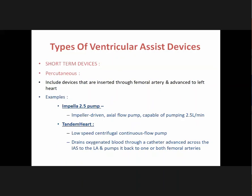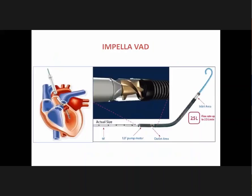Types of VADs: short-term devices are inserted percutaneously via an extracorporeal system. The two commonest percutaneous short-term devices are the Impella and the Tandem Heart. The Impella is an axial flow pump capable of pumping around 2.5 liters per minute. The Tandem Heart is a centrifugal continuous flow pump system that drains oxygenated blood through a catheter advanced across the atrial septum to the left atrium and pumps it back to one or both femoral arteries.